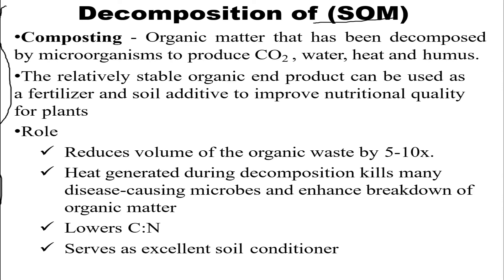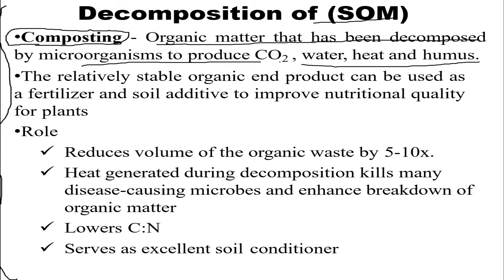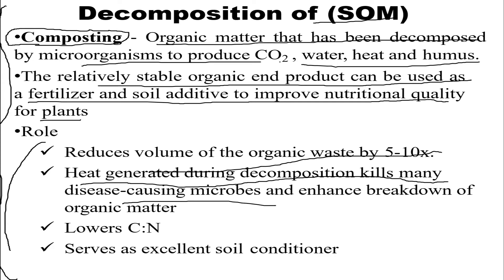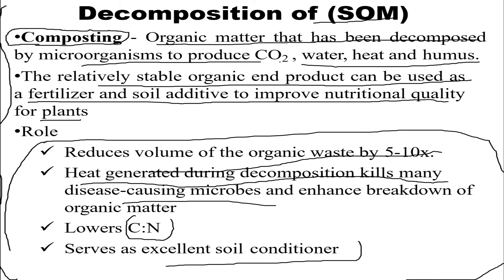Now let's talk about composting, another important step in the decomposition of soil organic matter. Composting involves organic matter being decomposed by microorganisms to produce CO2, water, heat, and humus. The relatively stable organic end product can be used as a fertilizer and soil additive to improve nutritional quality for plants. Composting reduces the volume of organic waste by 5 to 10 times. The heat generated during decomposition kills many disease-causing microbes and enhances breakdown of organic matter, and it lowers the carbon-to-nitrogen ratio.